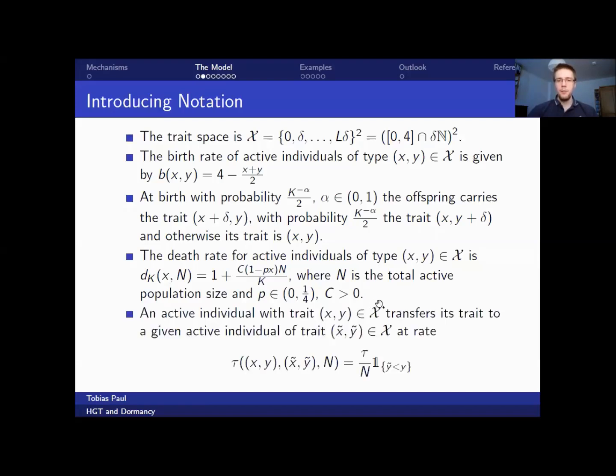We have the horizontal gene transfer, which will be governed by the second component. And when two individuals meet, which happens at rate tau over N, the individual with the larger second component is able to transfer its entire trait onto the individual with the lower second component.